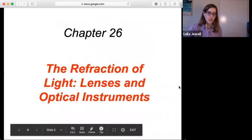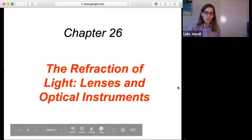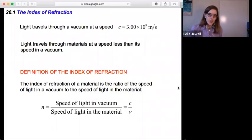Okay, so digging into Chapter 26, section 26.1, the index of refraction. Now light, we have already seen, travels through a vacuum at a set speed, the speed of light c, 3.00 times 10 to the 8 meters per second.